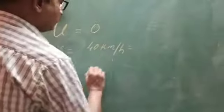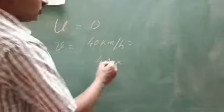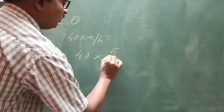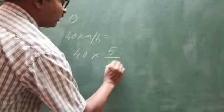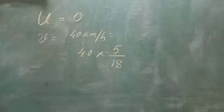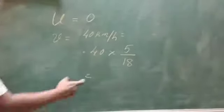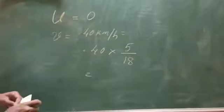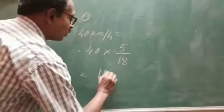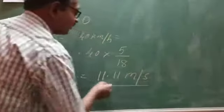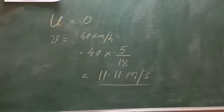To convert, we multiply 40 by 5 divided by 18. So the final velocity is equal to 11.11 meters per second. This is the final velocity.